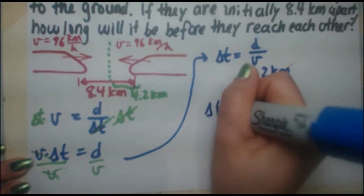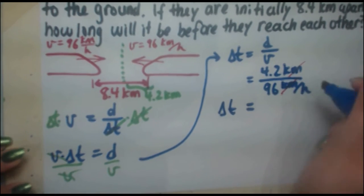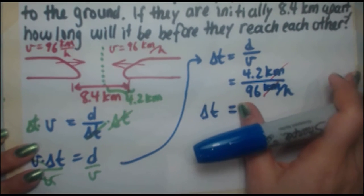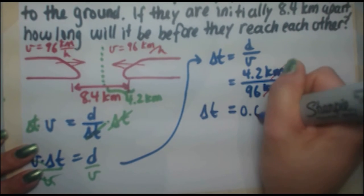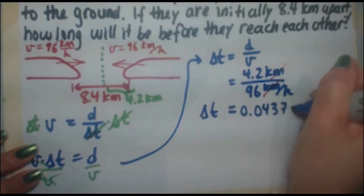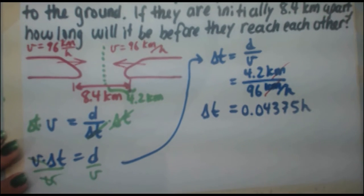If you divide 4.2 divided by 96, you're going to get a really small number, 0.04375 hours. Now, we don't want to quote the final answer in hours. We're going to try to quote it in minutes into a value that makes more sense.